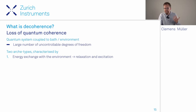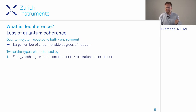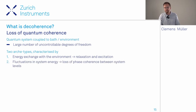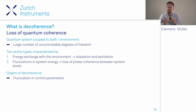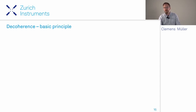Decoherence has two archetypes. The first is relaxation and excitation, due to energy exchange with the environment—typically the qubit emitting energy, but also possibly absorbing it. The second is dephasing, due to fluctuations in qubit parameters such as energy splittings between qubit states. These fluctuations arise from fluctuations in the control parameters that control the qubit energy.